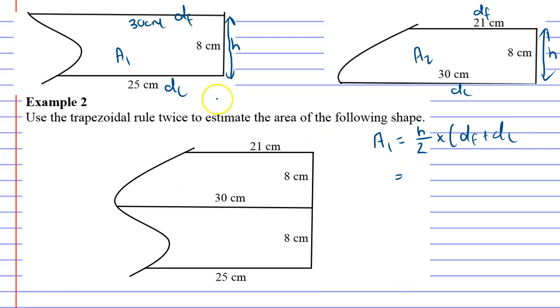All right, so for the first shape, my height is 8, and the two numbers I'm adding are 30 and 25. All right, so I'm going to work that all out just on the calculator here. So 30 plus 25 is 55 times 8 over 2, 220 centimetres squared, 220 centimetres squared. That's my first shape.